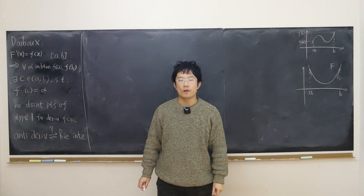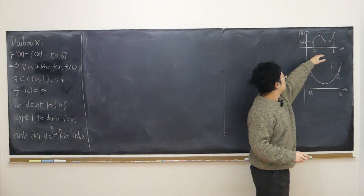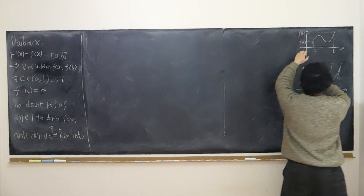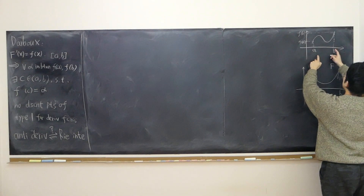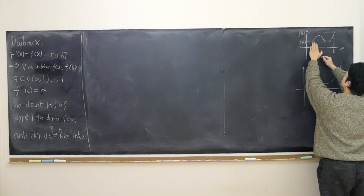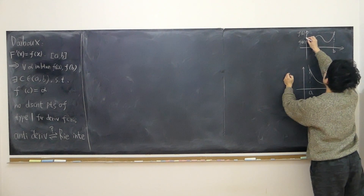If a function is continuous over some closed interval [a, b], then it has the intermediate value theorem property. This means if f(a) is less than f(b), then for any value alpha in between those two values — for example, alpha somewhere here — there exists some x whose functional value equals alpha.